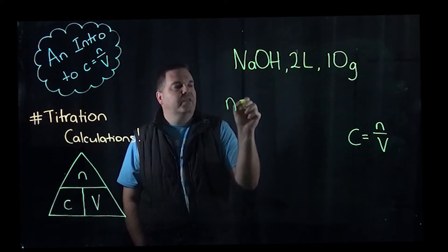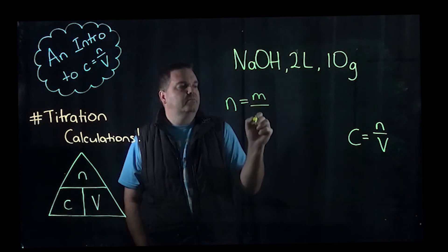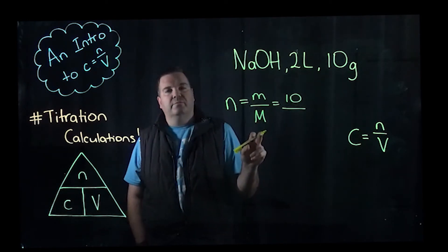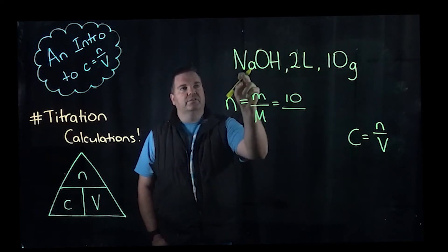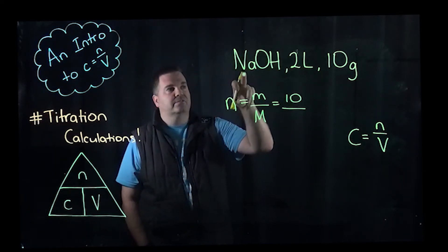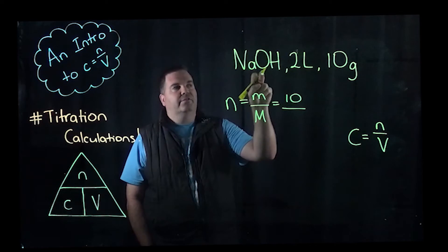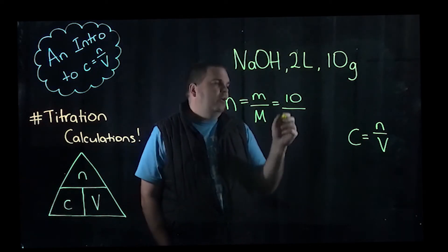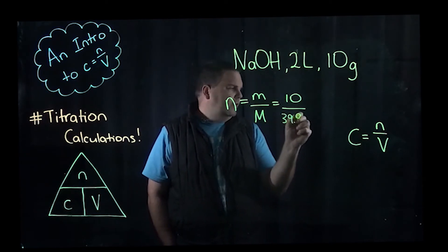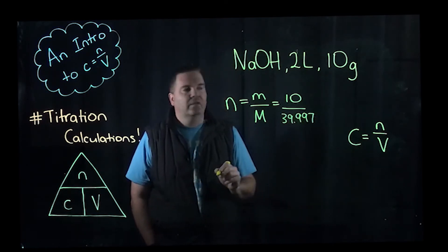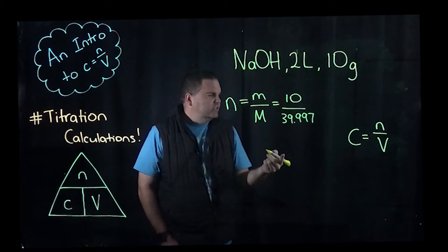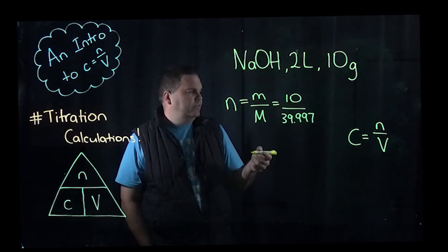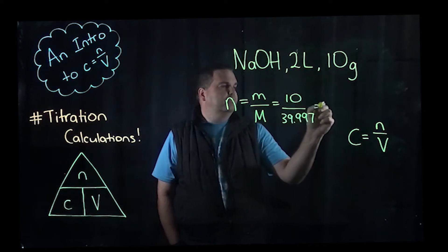So number of moles is mass over molar mass. So it's 10 over the molar mass of sodium hydroxide, which is done by adding up the 22.99 atomic mass of sodium plus 15.99 for oxygen plus 1.008 for hydrogen. So adding all of those up together you get a molar mass of 39.997. So if you do that calculation, you'll get the number of moles, which is about 0.25.